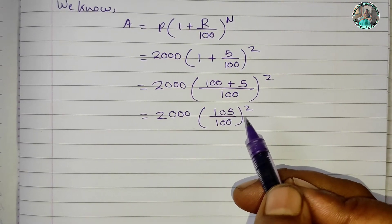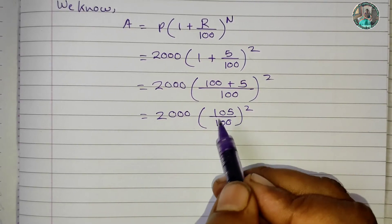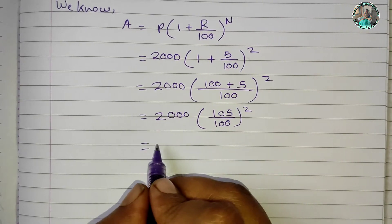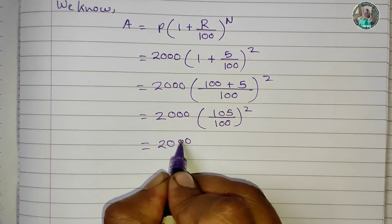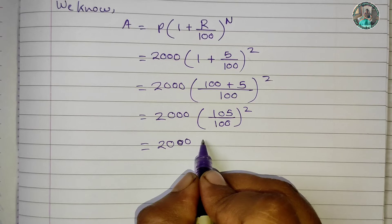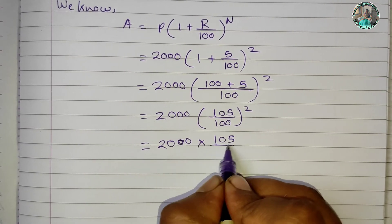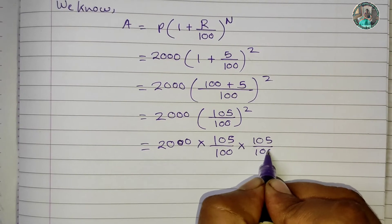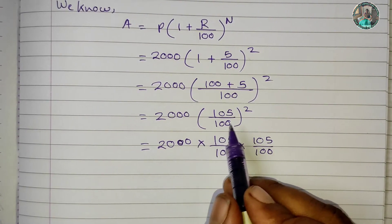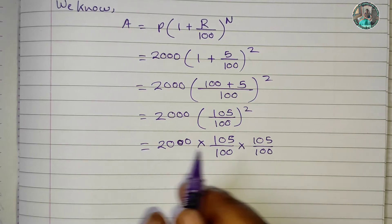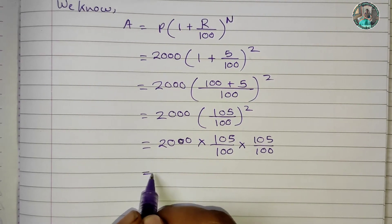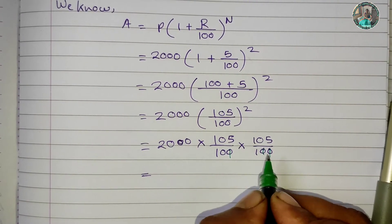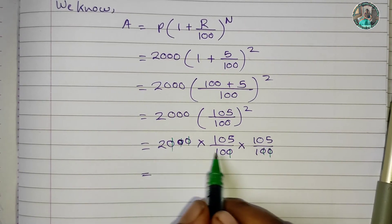We can square this, but we'll solve it step by step. This is 2000 multiplied by 105 upon 100, again 105 upon 100. We can cut some zeros.